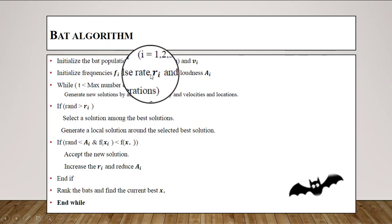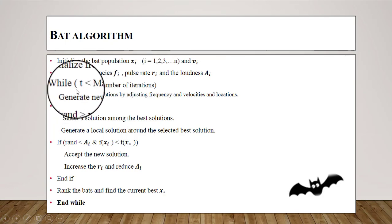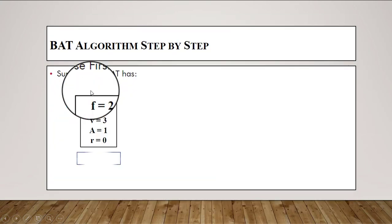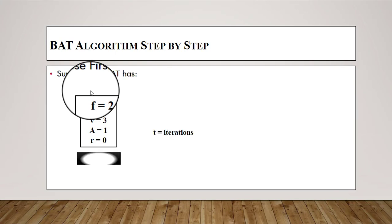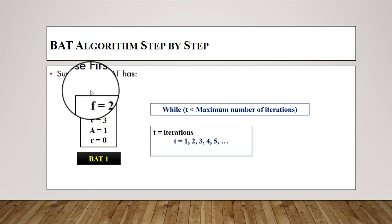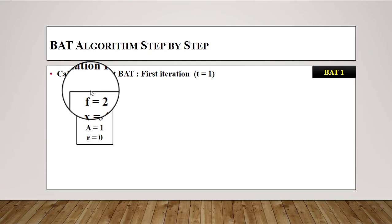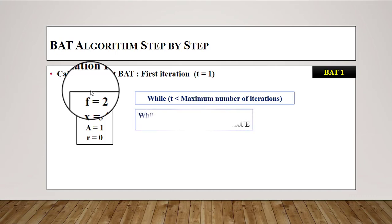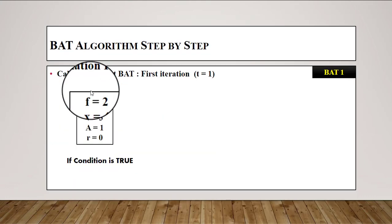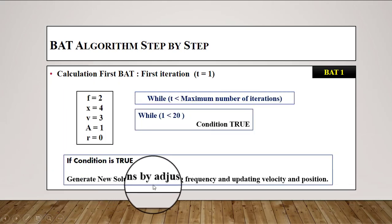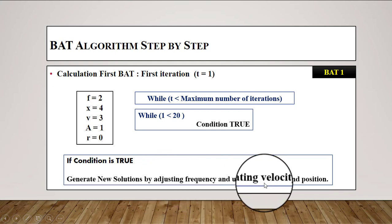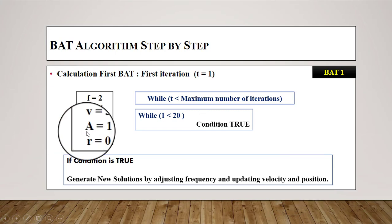After initialization, we check the condition: while t is less than the maximum number of iterations. Here t is the iteration number ranging from 1 to n, and we set the maximum number of iterations to 20. For the first bat in iteration 1, t = 1, so the condition is true. When the condition is true, we generate a new solution by adjusting the frequency and updating the velocity and position.